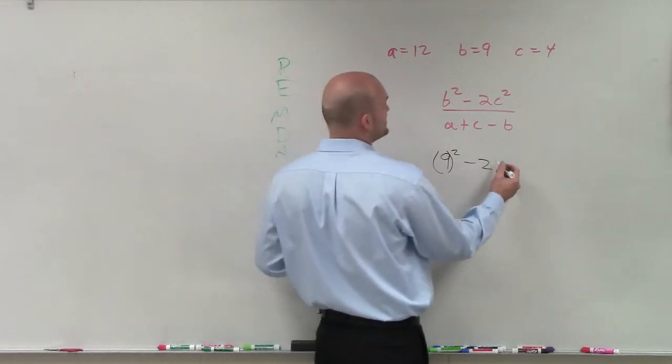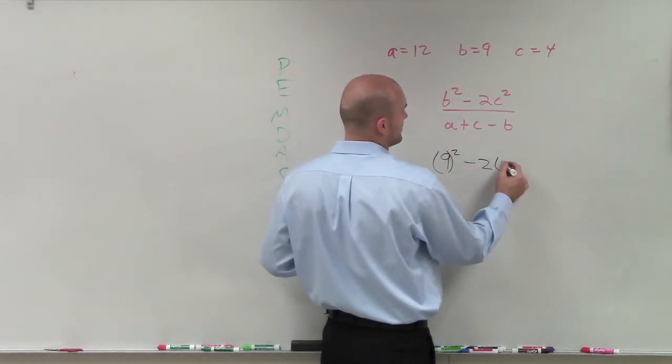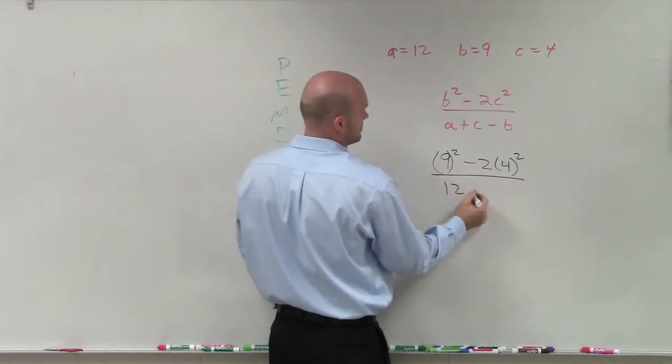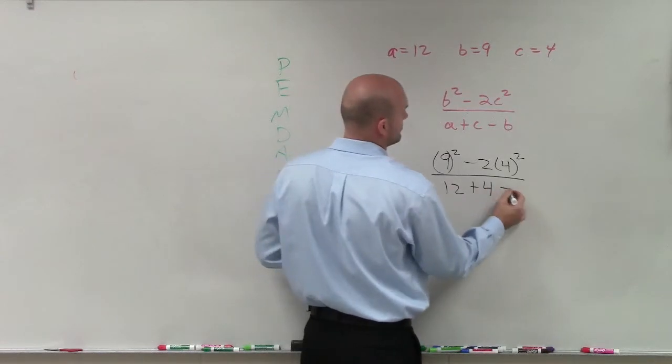So I have 9 minus 2 times C squared, which would be 4 squared, divided by A, which is 12, plus 4, minus 9.